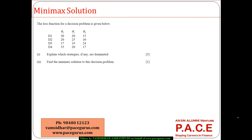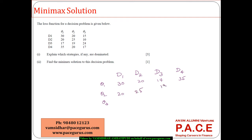Let's look at this numerical. The loss function for a decision problem is given like this — you have four decisions and three situations. It would have been better written this way, as this is the most common format. The loss function values for theta 1, theta 2, theta 3 are: 30, 20, 17, 35 — then 20, 25, 19, and 20 — then 15, 10, 24, 17. These are the losses: loss for decision 1 if theta 1 comes up, loss for decision 1 if theta 2 comes up, loss for decision 1 if theta 3 comes up.